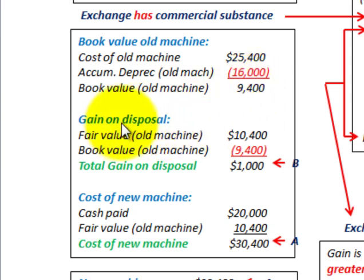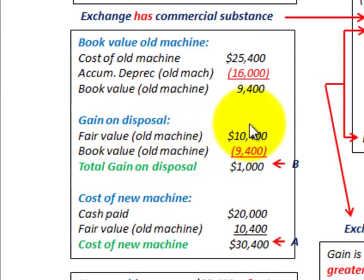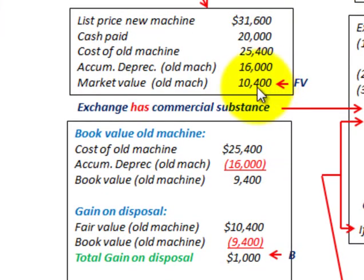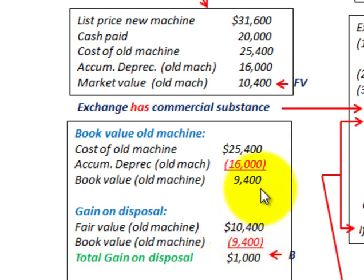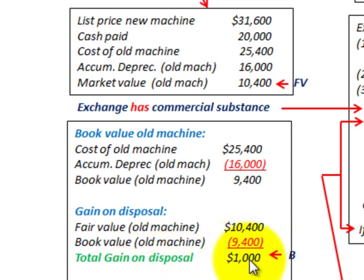To determine any gain on disposal, we take the fair value of the old machine — that was the market value, $10,400 — and subtract out the book value of the old machine, which we calculated as $9,400. The difference gives us the total gain on disposal: in this case, a gain of $1,000 on the exchange of the old machine for the new one.